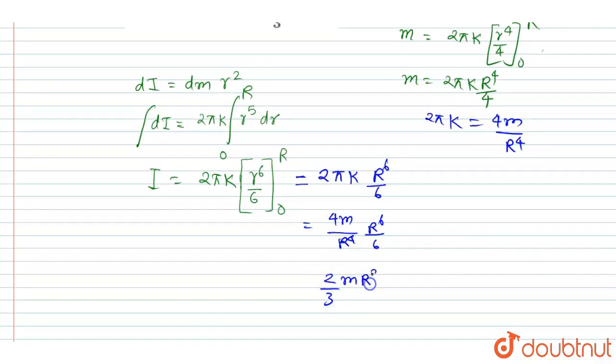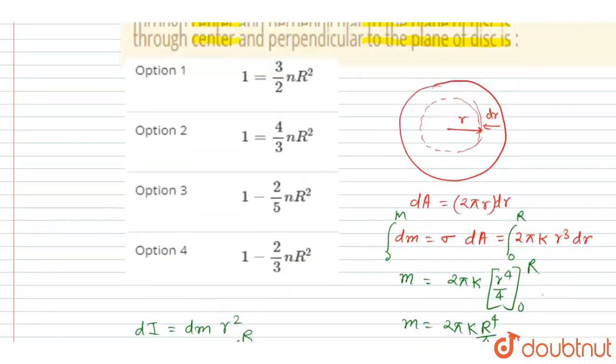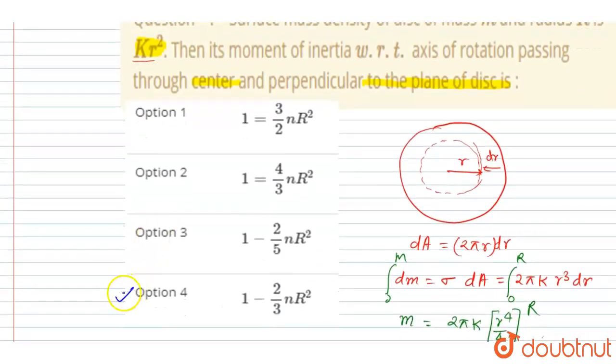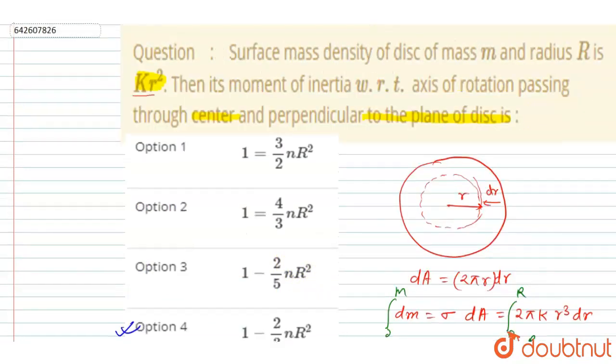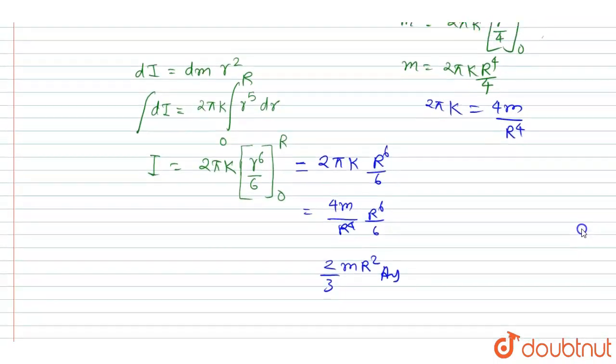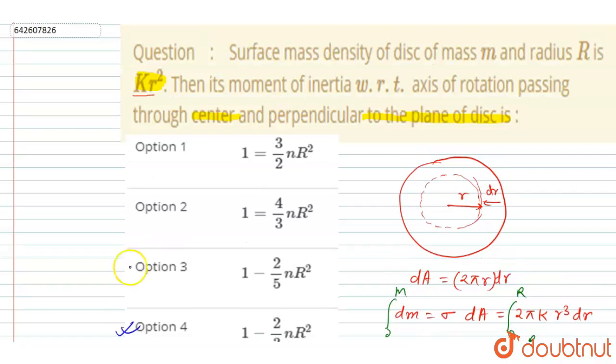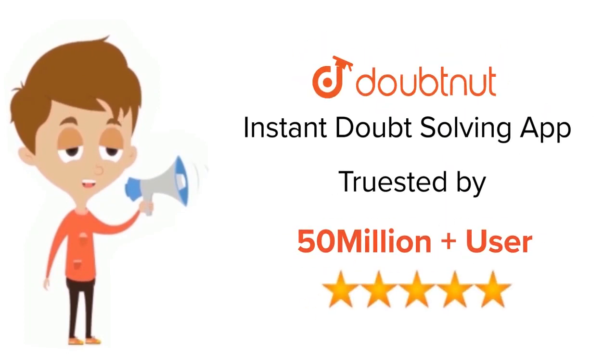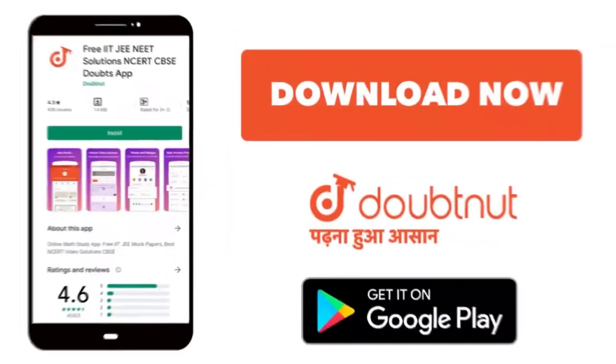So if you see the options here, so D is the correct option. I is equal to 2/3 m r square. Now you can see the question was this: we wanted to find out the moment of inertia of the disk whose surface mass density is varying as kr square, and we got the answer 2/3 m r square. Simple, thank you. For class 6 to 12, IIT-JEE and NEET level, trusted by more than 5 crore students, download Doubtnet app today.